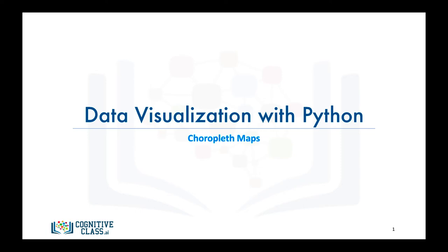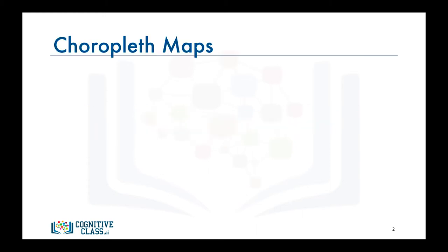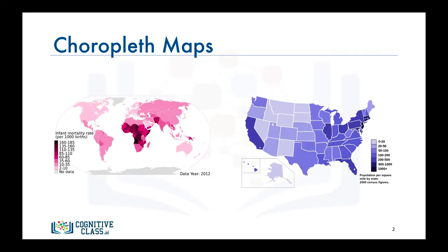In this video we will learn how to create a special type of map called a choropleth map with Folium. Most of you have probably seen maps similar to these — these are what we call choropleth maps. A choropleth map is a thematic map in which areas are shaded or patterned in proportion to the measurement of the statistical variable being displayed, such as population density or per capita income.